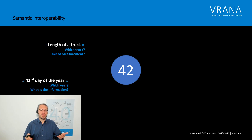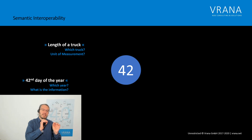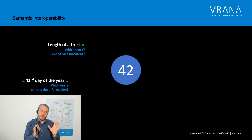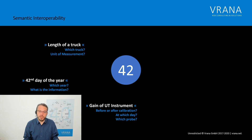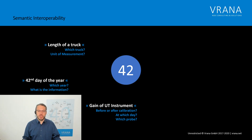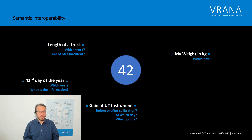It could also be the 42nd day of a year, which gives a little more information, but which year? It could be the gain of a UT instrument — is it before or after calibration? On which day did we do that calibration, or when did we measure this 42? Which probe did we use? It could even be my weight in kilograms — but on which day, how many years ago?